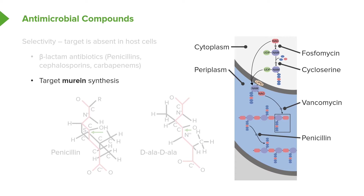On this slide are four different antibiotics — fosfomycin, cycloserine, vancomycin, and penicillin — which block different steps in the synthesis of murein. These antibiotics work beautifully because murein is only in bacteria and not in our cells, so they have very, very little toxicity.